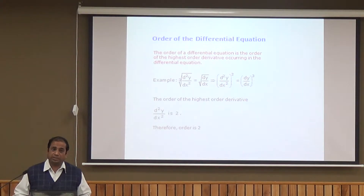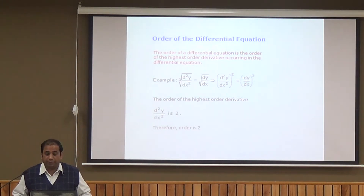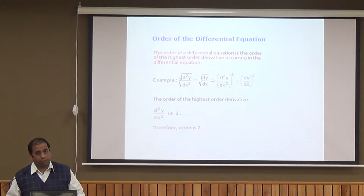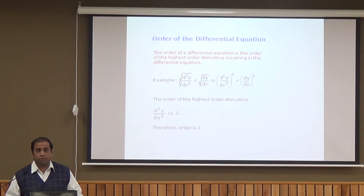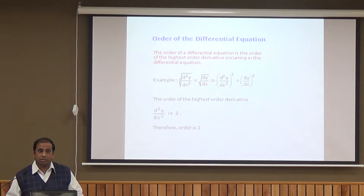Now we come to the order of a differential equation. The order of a differential equation is the order of the highest order derivative in the equation. For example, if we consider the cube root of d²y/dx² equals the square root of dy/dx, cubing both sides we get (d²y/dx²)² = (dy/dx)³. Here the highest order is 2, that is d²y/dx², so the order of this differential equation is 2.